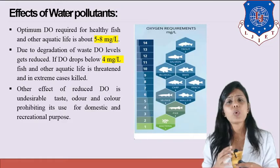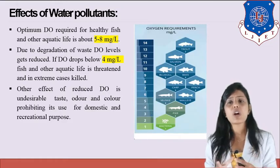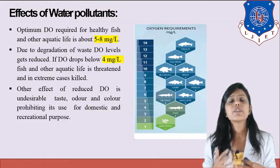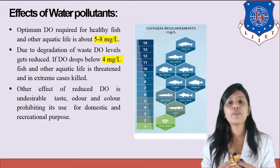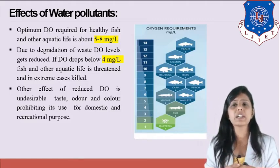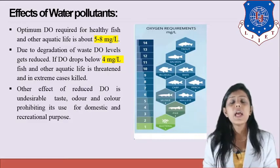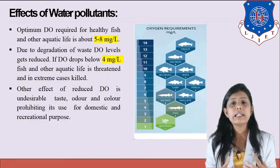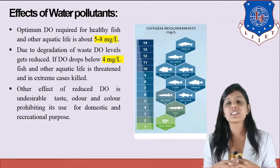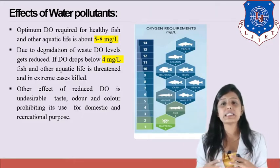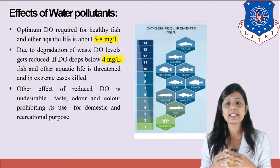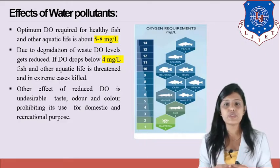But due to more degradation of waste, the dissolved oxygen level gets reduced further. If dissolved oxygen drops below 4 milligrams per liter, fish and other aquatic life is threatened and in extreme cases they are killed. Another effect is undesirable taste, odor, and color, prohibiting the water's use for domestic and recreational purposes.